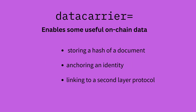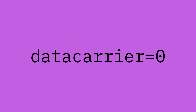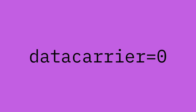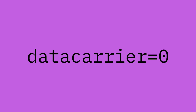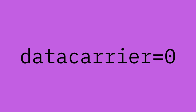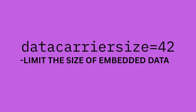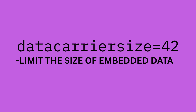OP_RETURN can be used for simple and valuable purposes like storing a hash of a document, anchoring an identity, or linking to a second-layer protocol. But it also opens the door to things like NFTs, token metadata, and large data blobs that bloat the chain and raise fees for everyone else. If you disable data carrier completely, your node will block any transaction using OP_RETURN — no exceptions. That's a strong stance, but it guarantees your mempool stays focused on Bitcoin as money.